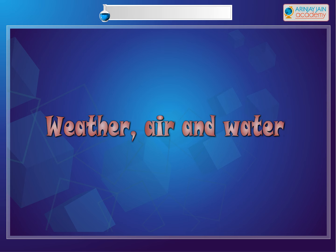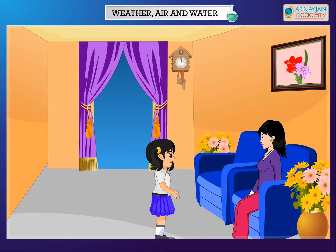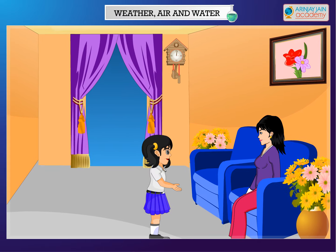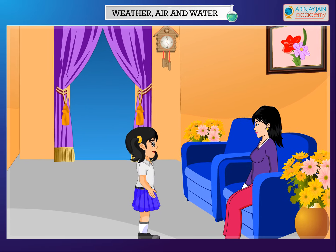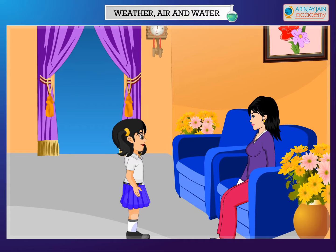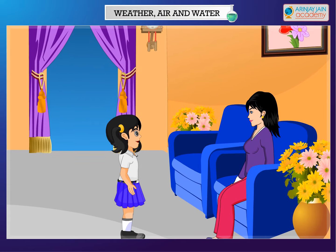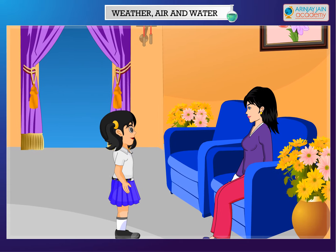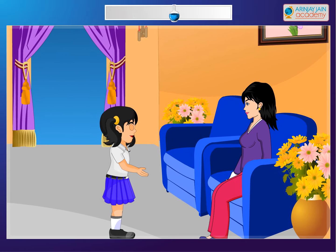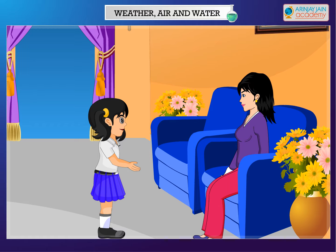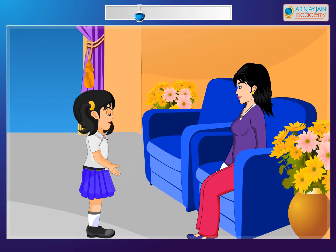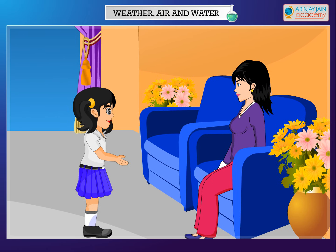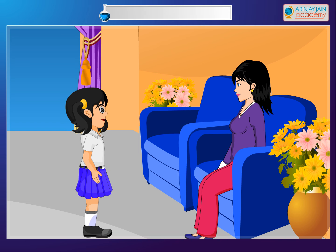Weather. Air and Water. Mama, it's dark and cloudy outside. When we were going to school in the morning, the sun was shining brightly. While returning back home, it has become dark and cloudy. I wonder how the weather changed so suddenly.